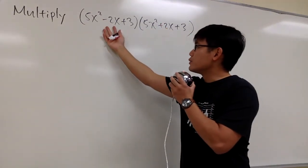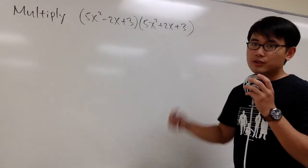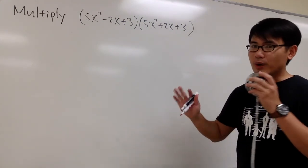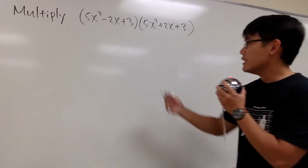As we can see, we have 3 terms right here and 3 terms right here. So we should do the box method to multiply this out. This way, everything will be more organized. So let's do that.